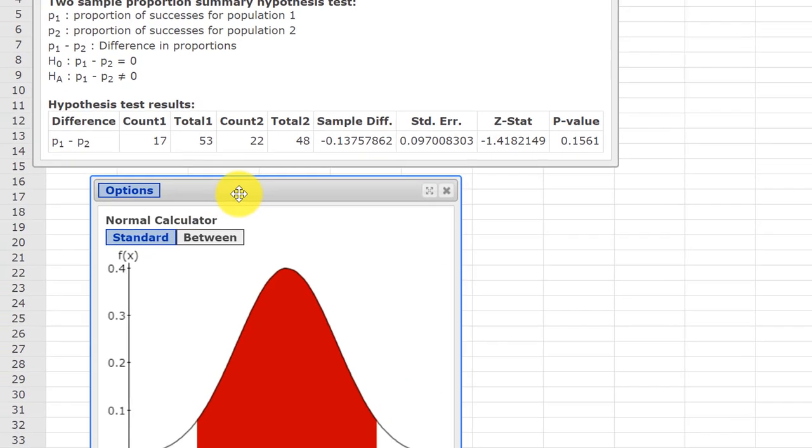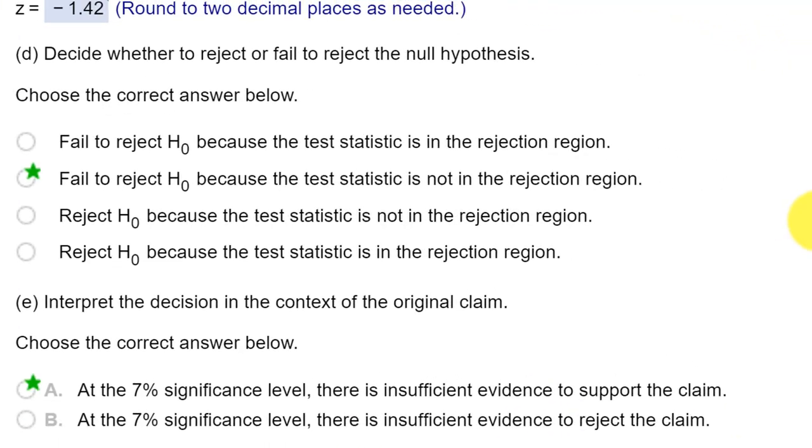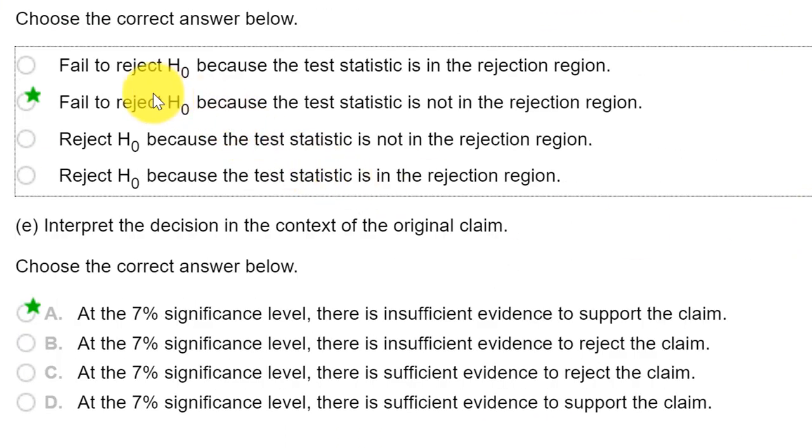And if we bring back up our chart here, we can see that this minus 1.42 falls over here somewhere, and that is not in the rejection area. So again, if we use the critical value approach to the hypothesis test, we get the same answer, fail to reject. So we go back over here to the final thing, and we've decided to fail to reject. The claim was the alternative. So our answer must be at the 7% significance level. We always need to give the significance level since if the significance level were different, we could get a different decision and different conclusion. But here there was insufficient evidence to support the claim because we did not reject the null.